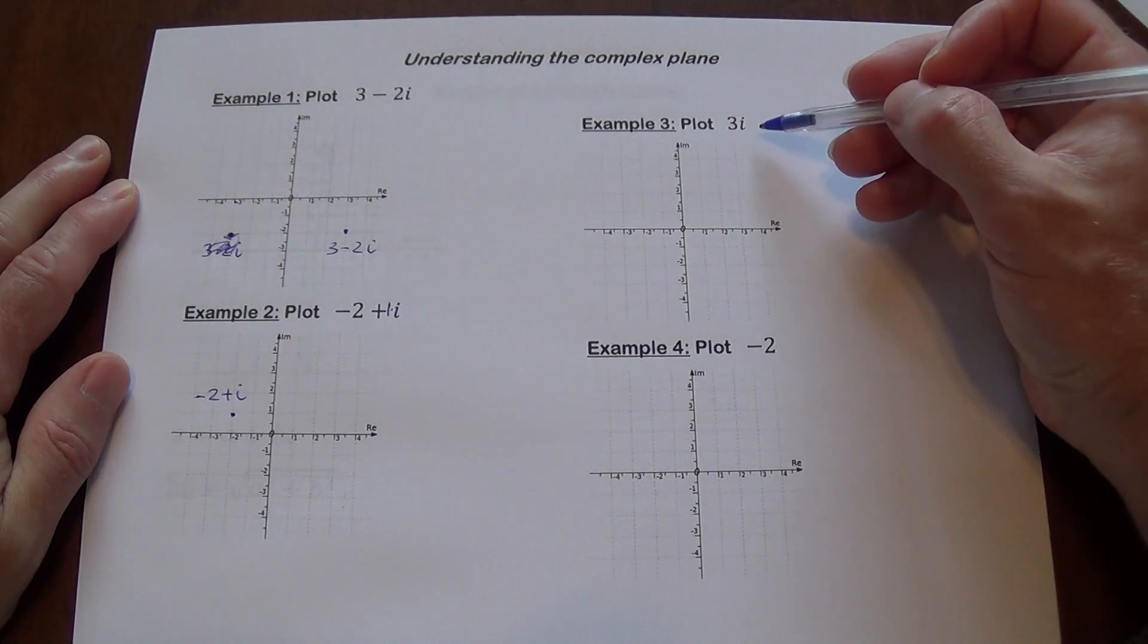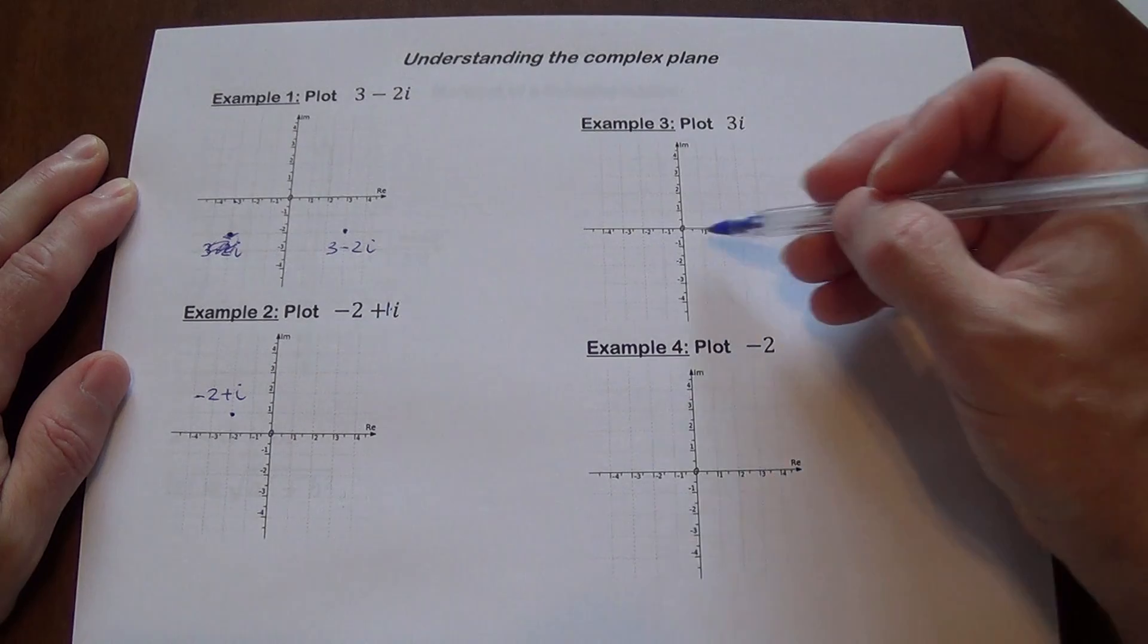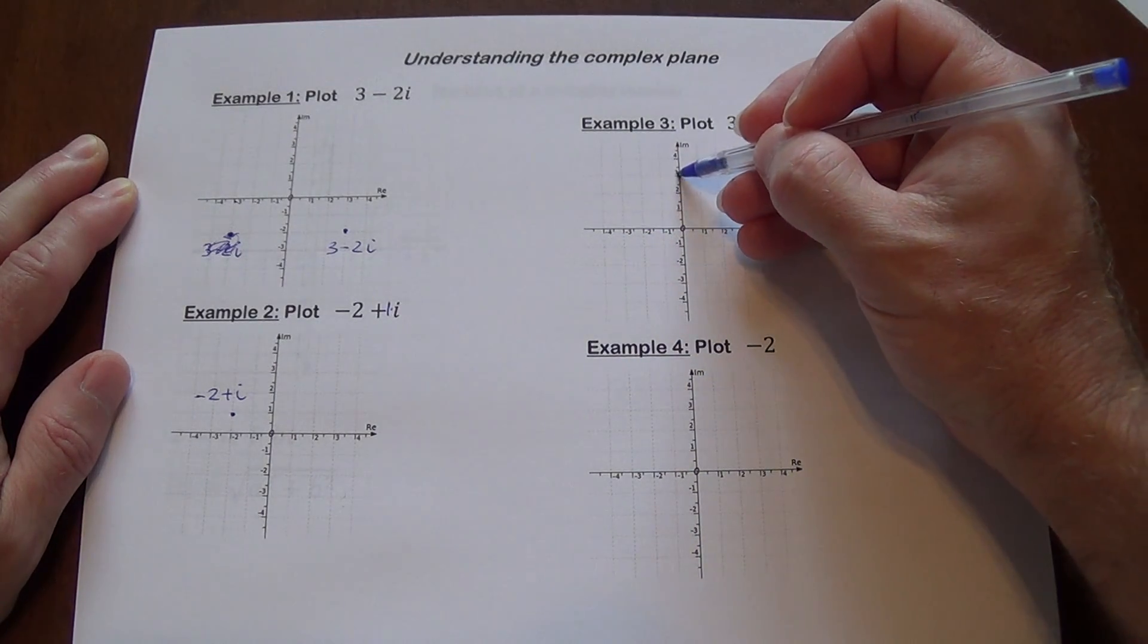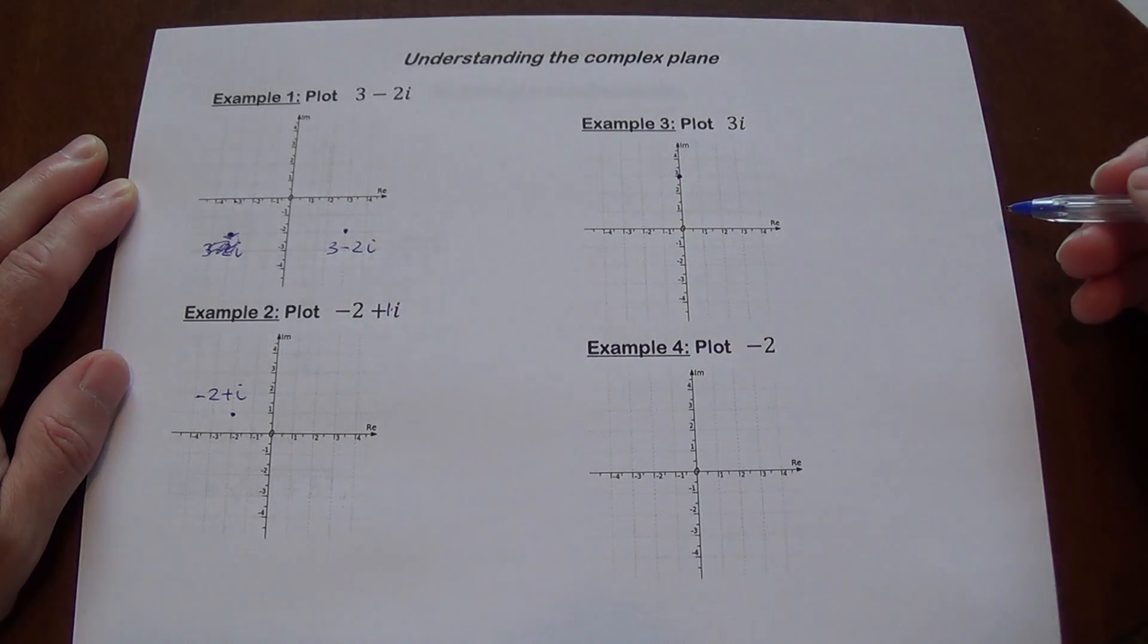Plot 3i. The real part is 0, which means I don't go horizontally at all. And 3i is just the imaginary part. This number is actually going to end up being right there on the vertical axis, on the imaginary axis.